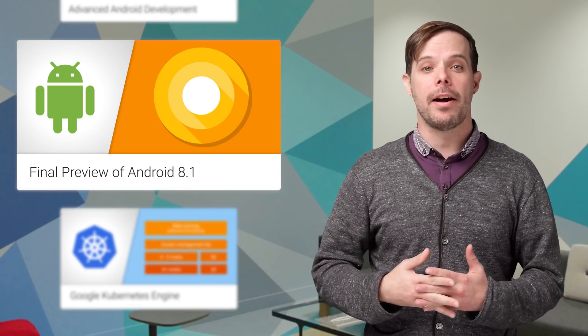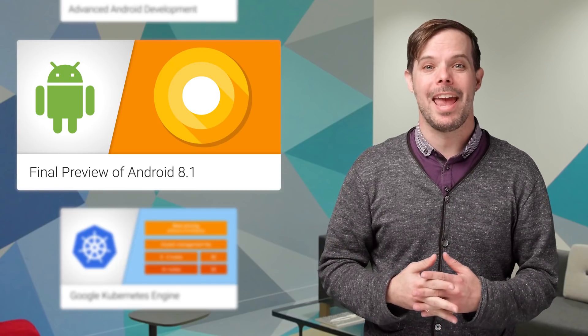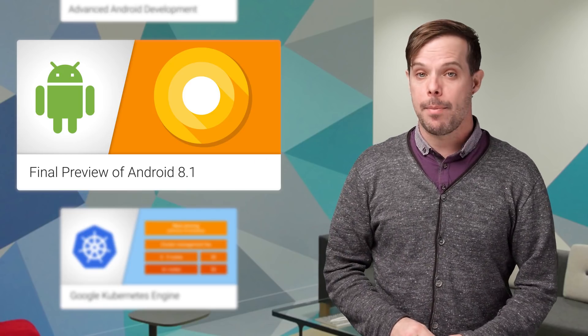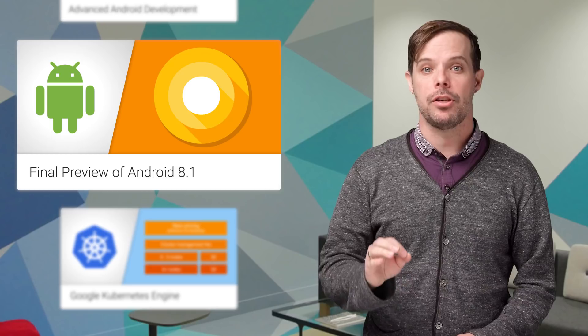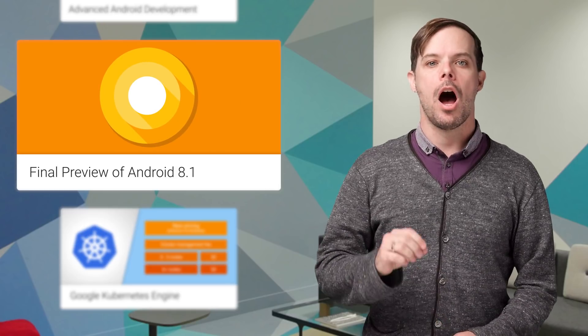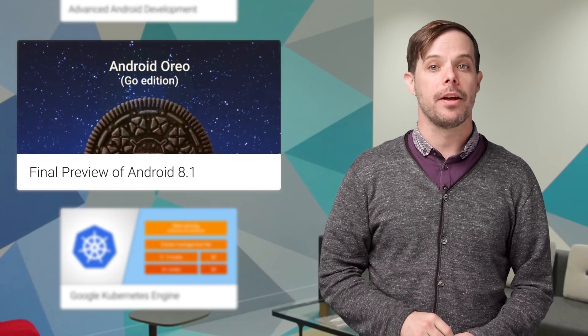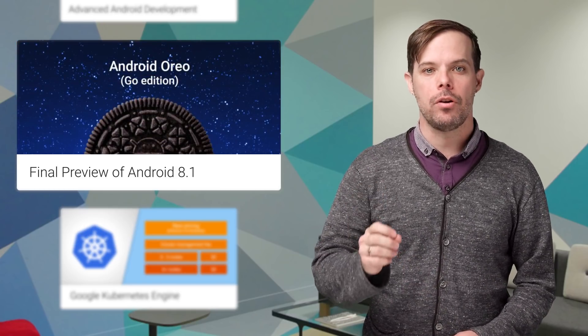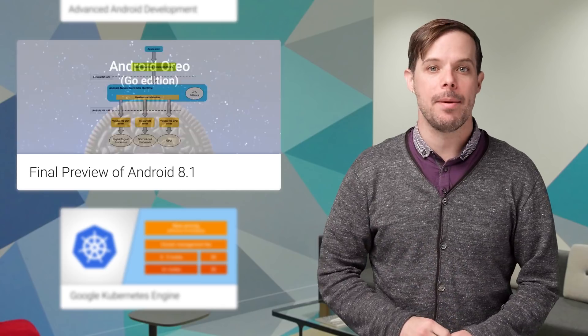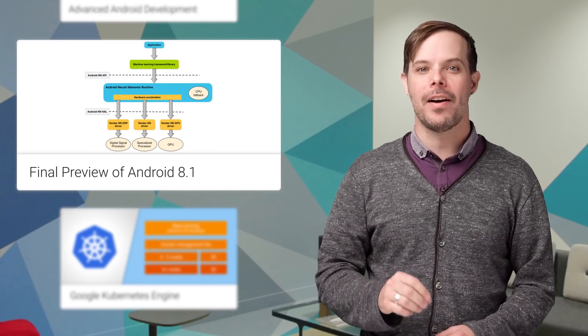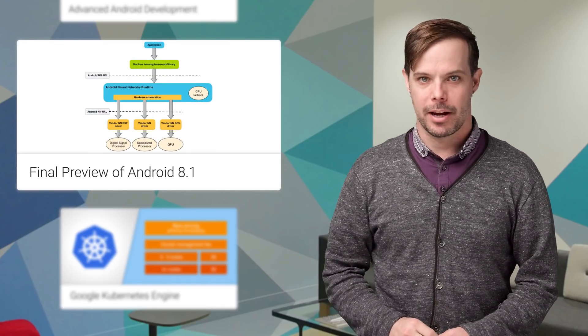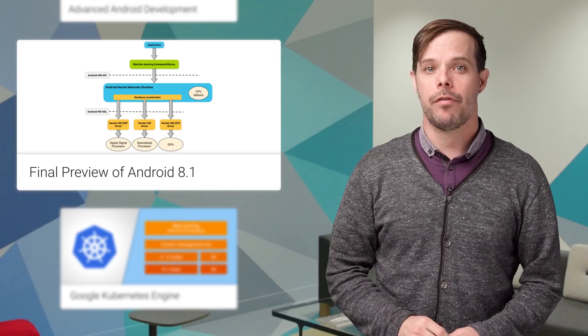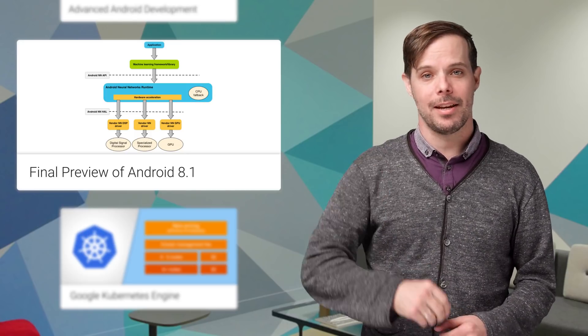Starting today, we're rolling out the final update to the Android 8.1 Developer Preview before the official launch to consumers in December. Android 8.1 adds targeted enhancements to the Oreo platform, including optimizations for Android Go and a neural networks API to accelerate on-device machine intelligence. Check out the post for how to test your app with this update.